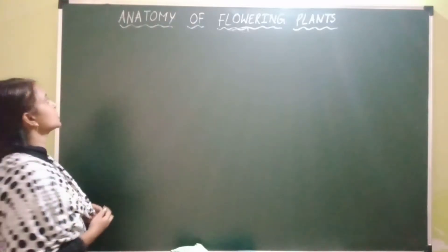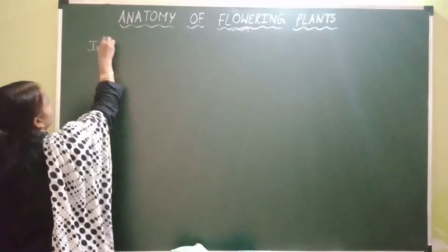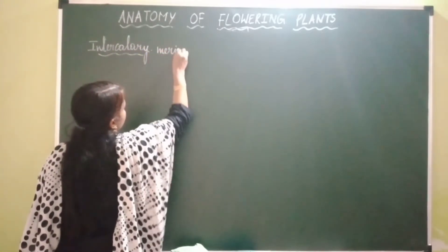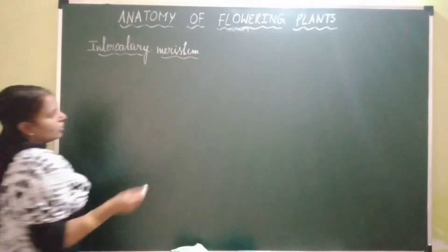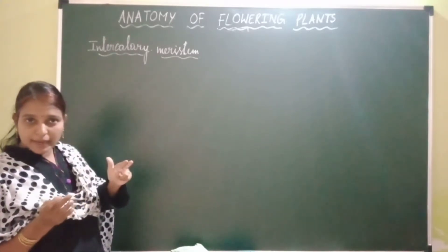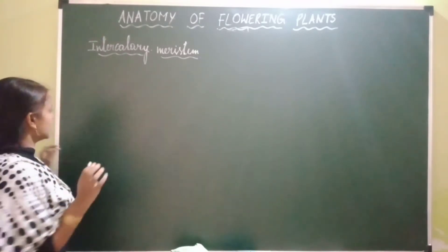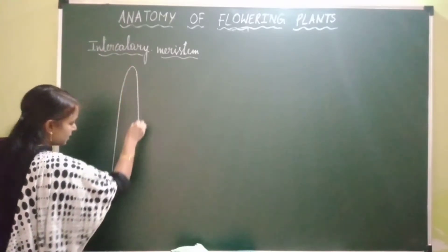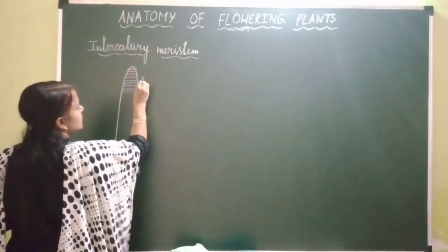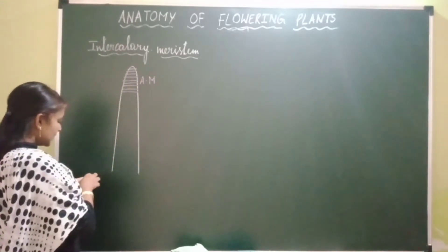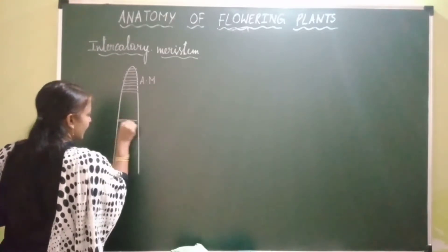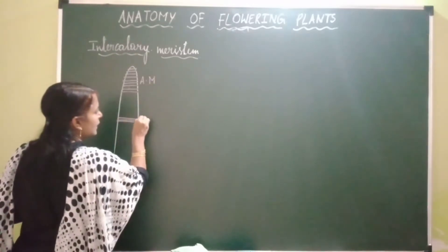Now let's start with intercalary meristems. Intercalary meristems are formed by some of the apical cells which are left behind or separated from the apical meristematic cells. This is the shoot and this is the apical meristem. Some of the cells present in this apical meristem get separated and acquire a lower position, resulting in the formation of a meristem called intercalary meristem.